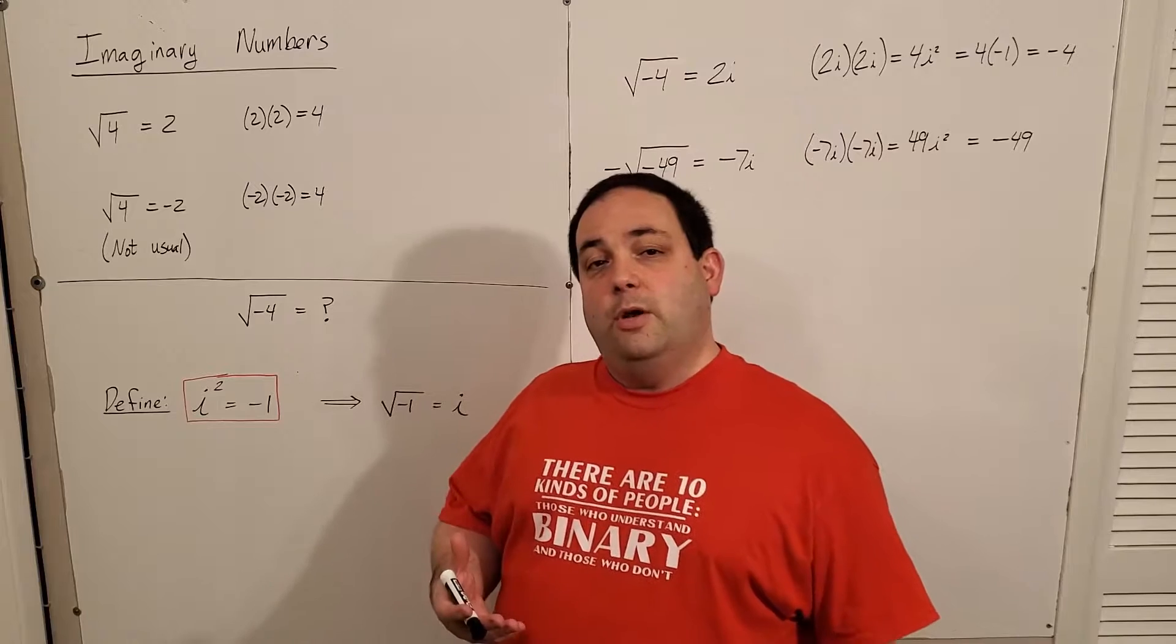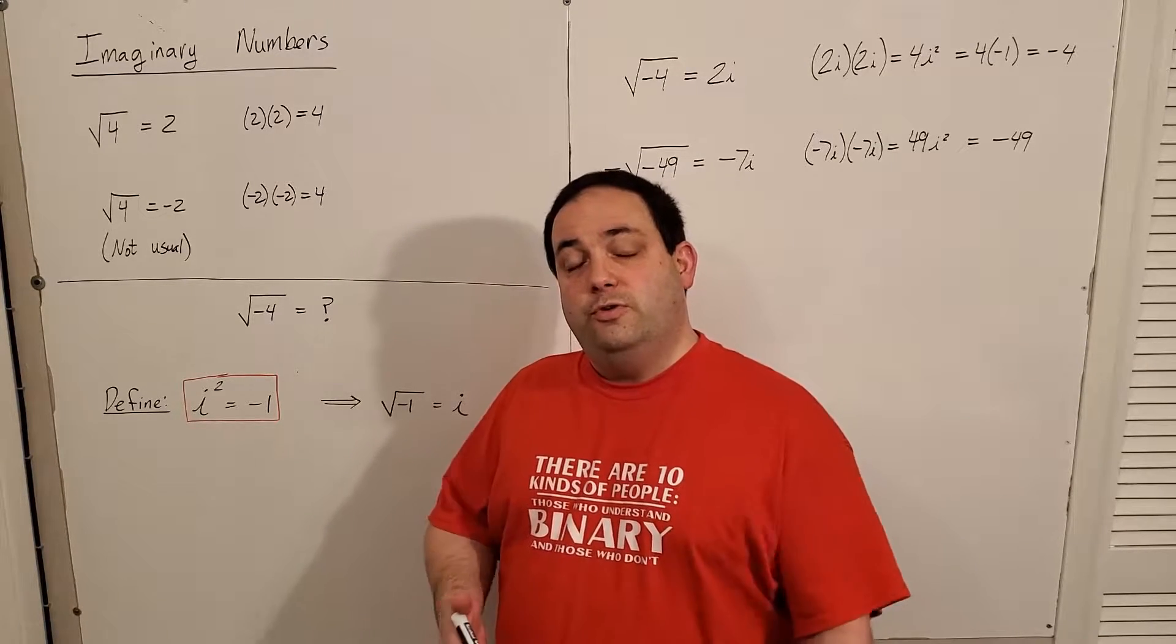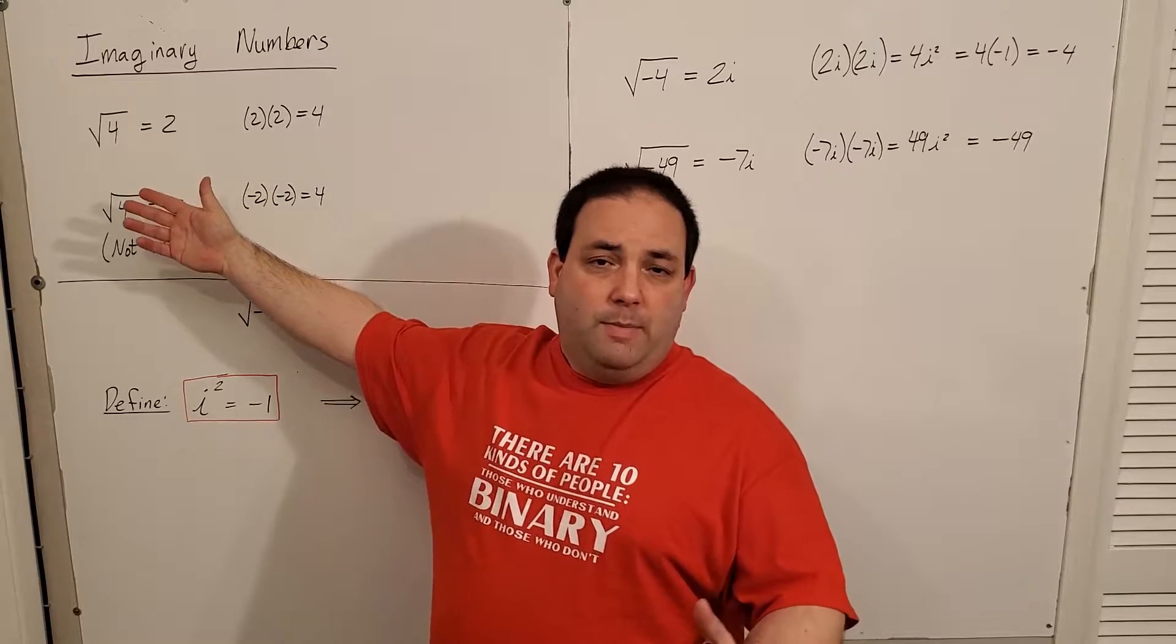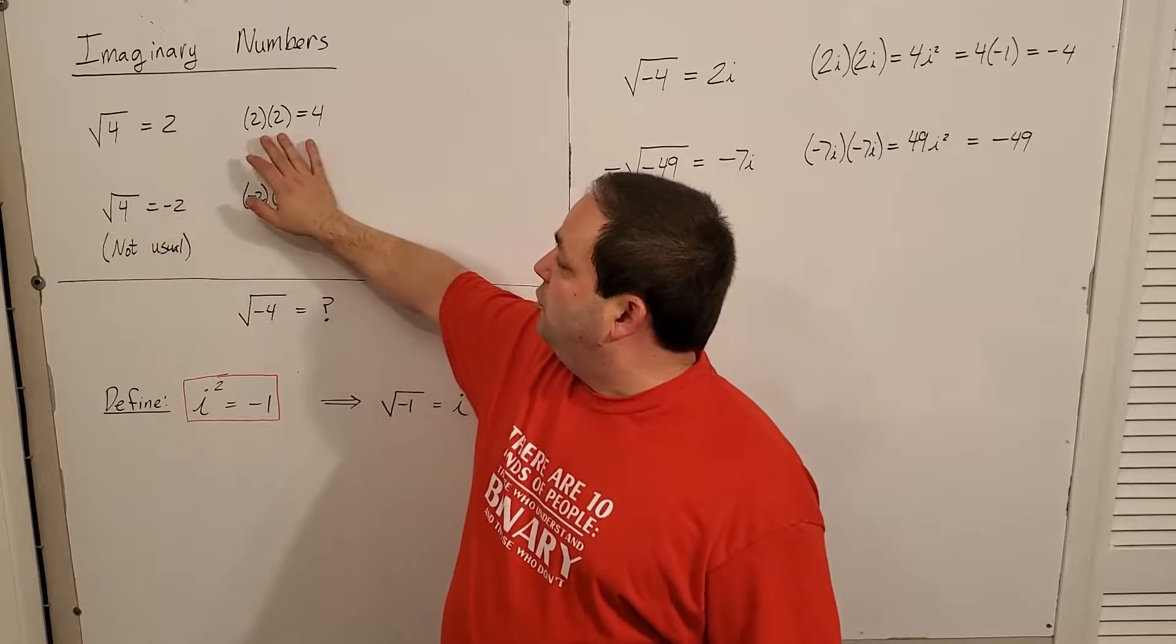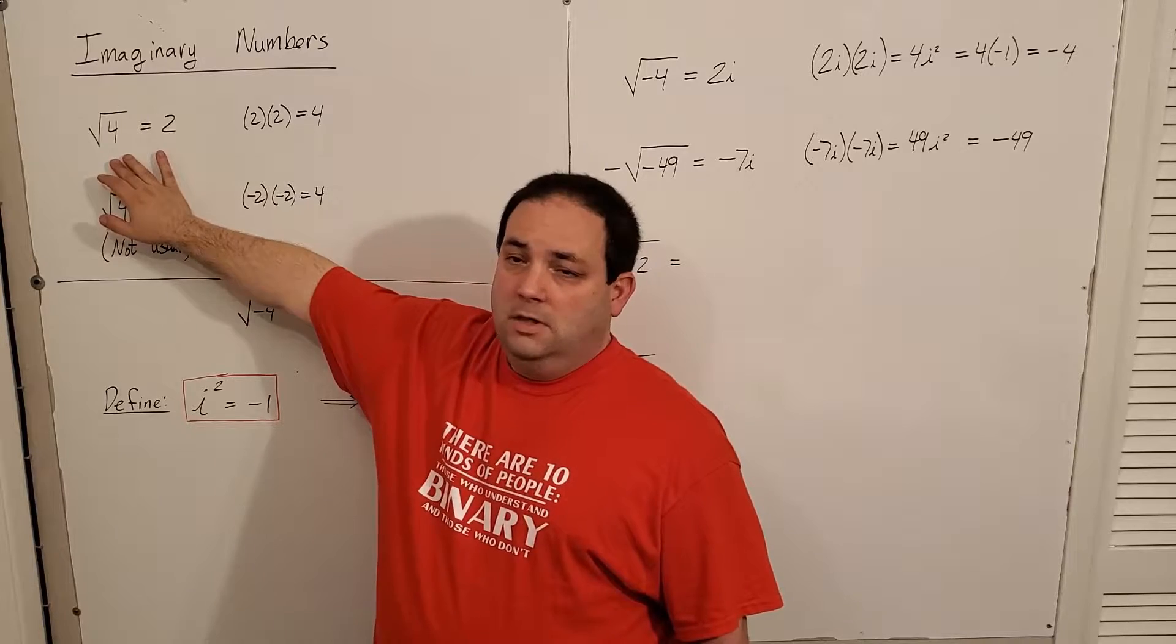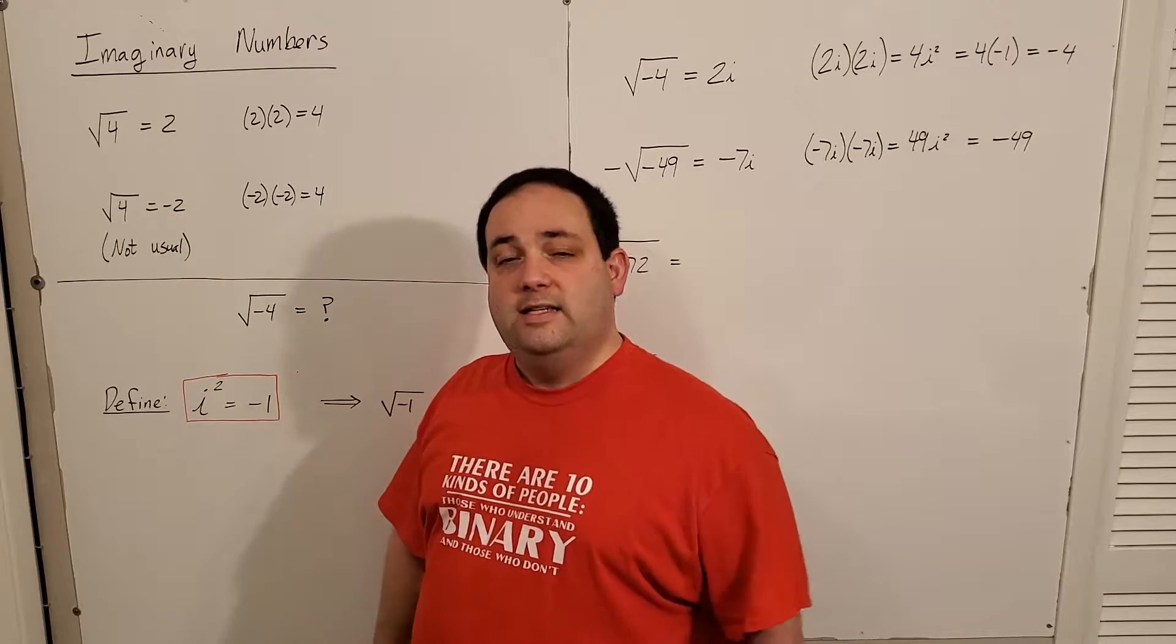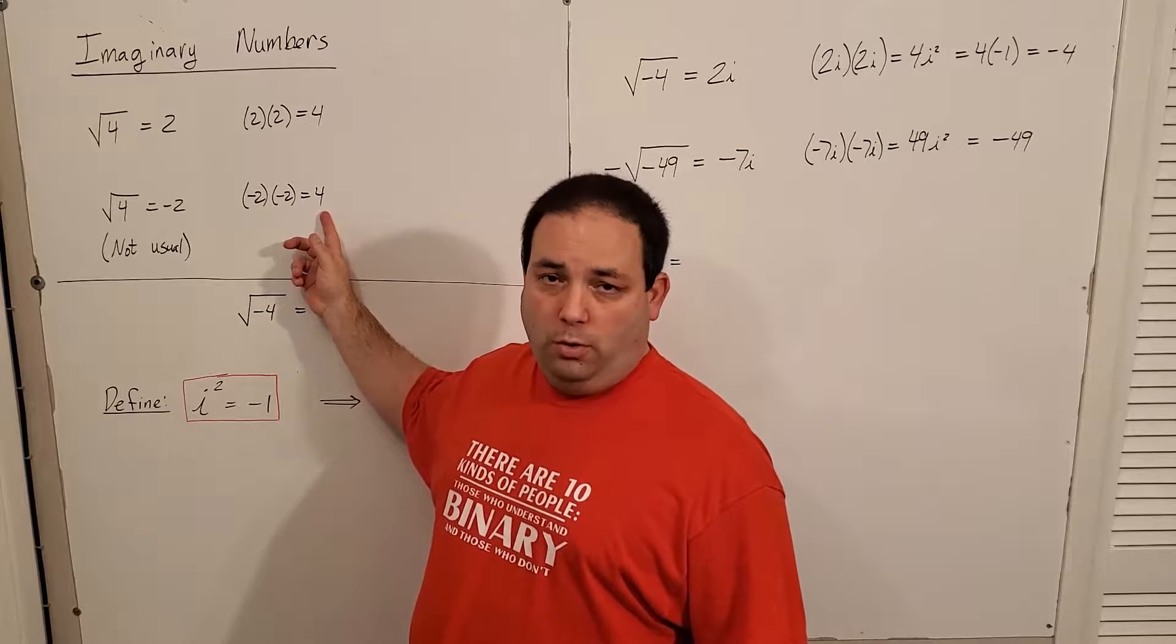The idea of imaginary numbers comes from being able to do the square root of negative values. So if I do the square root of 4 and it's 2, what does that really mean? By definition, it means that 2 is a value that when you square it, 2 times 2, I get the 4 back. And of course, the square root of 4 could also be negative 2 because negative 2 times negative 2 is also 4.